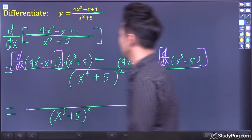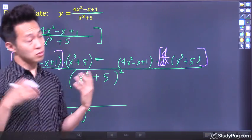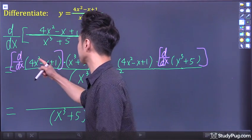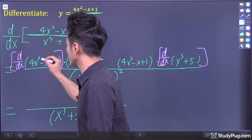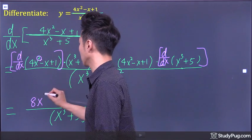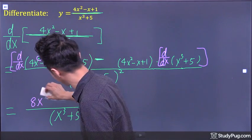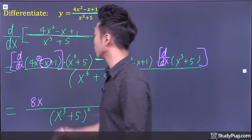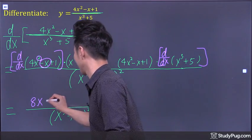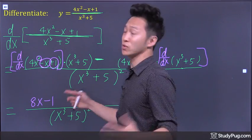On the bottom we have x cubed plus 5, squared. Now let's take care of the numerator. We need the derivative of the first function — a polynomial — so we apply the power rule. Bring the exponent to the front: 2 times 4 gives 8, and x to the 2 minus 1 is just x. The derivative of negative x is negative 1. The derivative of the constant 1 is 0, so we don't write it.